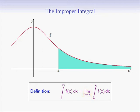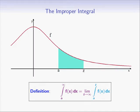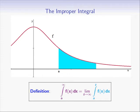The idea behind this definition is simple. For a fixed z, the integral from a to z is an ordinary definite integral. Z is an arbitrary number greater than a. The improper integral from a to infinity is obtained by making z larger and larger and approaching infinity.